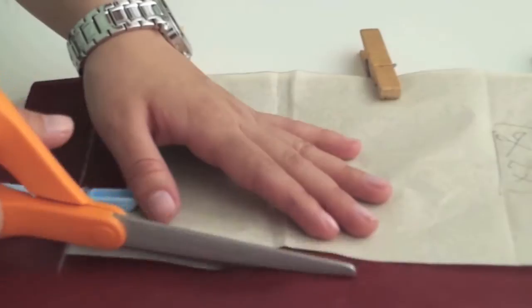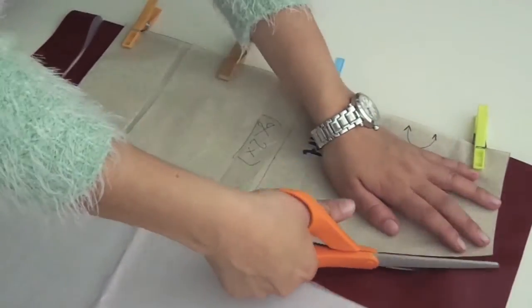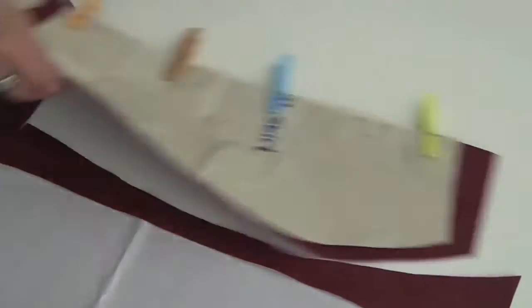I cut two centimeters on the bottom edge for the hemline and then one centimeter for seam allowance all the way around.